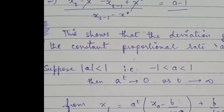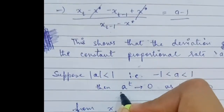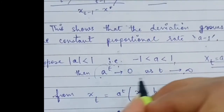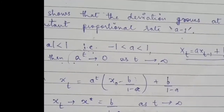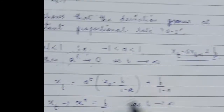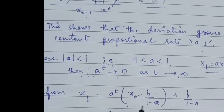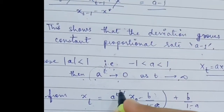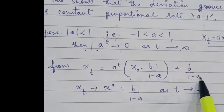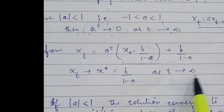So a can basically be between minus 1 and 1, and we know that if a is less than 1 then as t increases, the value of a raised to the power t will decrease. If t tends to infinity then a raised to the power t will tend to 0. In such a case, the solution of the difference equation is already derived. As t tends to infinity, if a^t tends to 0, then the first term tends to 0 and xt will tend to b upon 1 minus a.